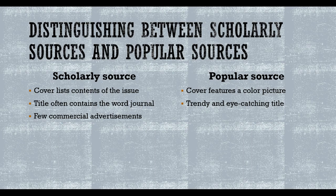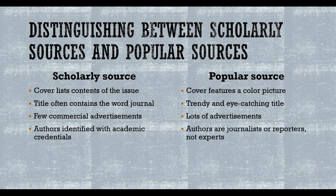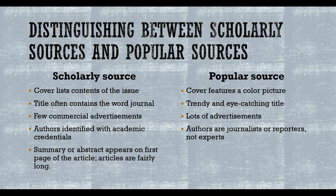Scholarly journals have almost no advertisements, whereas popular magazines are full of them because their purpose is generally to entertain or sell a product. The authors of scholarly sources are experts in their fields — all claims are supported with credible evidence, and the credentials and affiliations of the authors are listed within the source. In contrast, authors of popular sources are usually journalists or reporters, not experts, and their credentials are not provided.